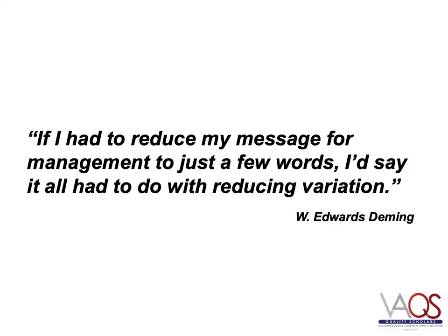Edward Deming was an early leader in the use of statistical methods to improve quality in industry. One of his obsessions was variation — reducing unwanted variation and understanding appropriate variation. He encouraged organizations to reduce statistically significant variation and to not overreact to slight changes in the system, which are often expected, predictable, and appropriate.